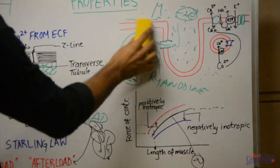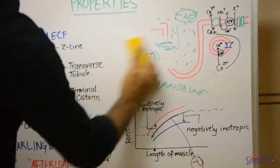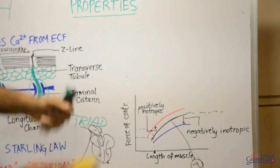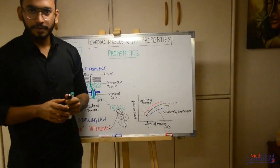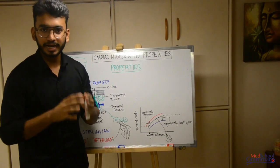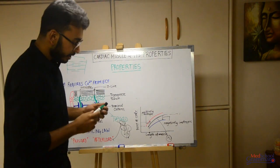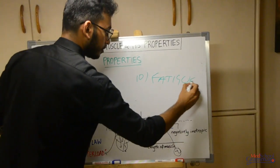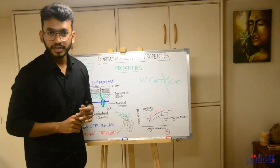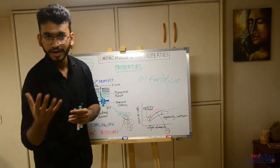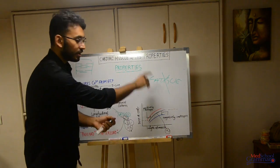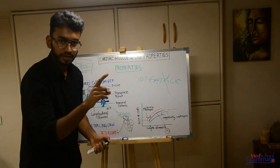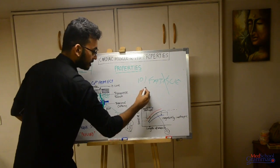Now the last property of cardiac muscle: two terms people often confuse — fatigue and tetanus. Fatigue means reduced ability of the muscle to contract. Tetanus means a sustained state of contraction. The tenth property is that cardiac muscle cannot be fatigued. If the heart became fatigued, survival would not be possible. Fatigue means the muscle gets tired and stops working temporarily; after rest, the power of contraction returns. Cardiac muscle does not fatigue.